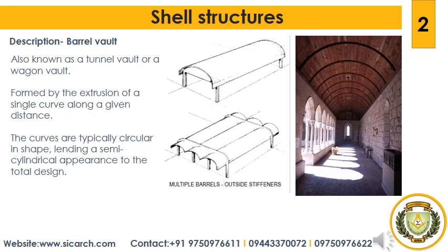A barrel vault, also known as a tunnel vault or wagon vault, is an architectural element formed by the extrusion of a single curve — or a pair of curves in the case of pointed barrel vaults — along a given distance. The curves are typically circular in shape, lending a semi-circular appearance to the total design. The barrel vault is the simplest form of a vault, effectively a series of arches placed side by side, one after the other.